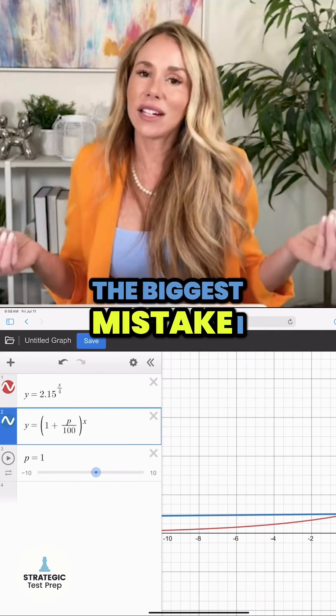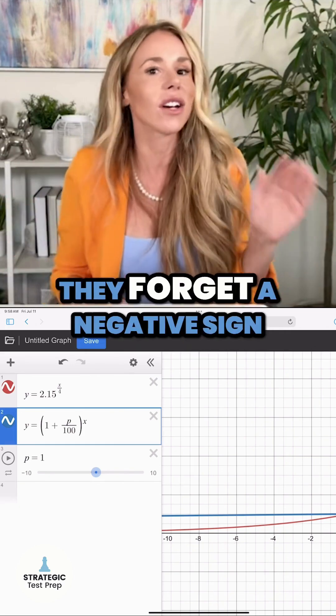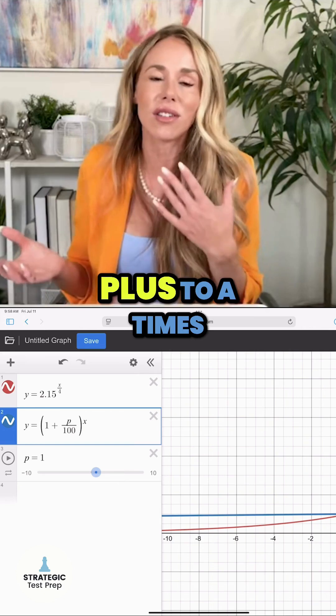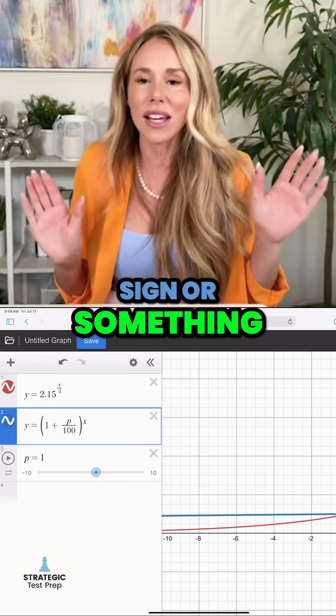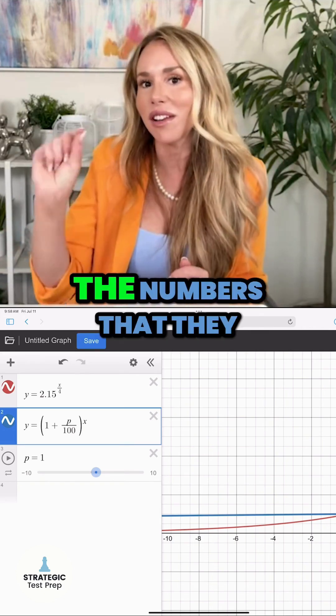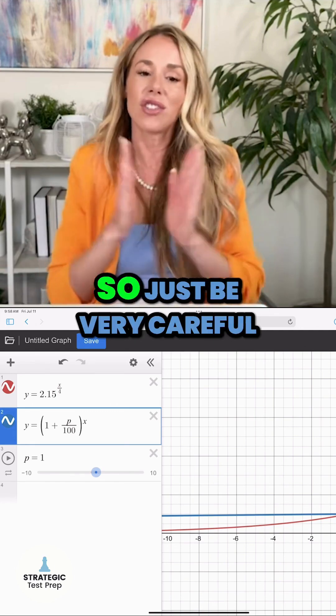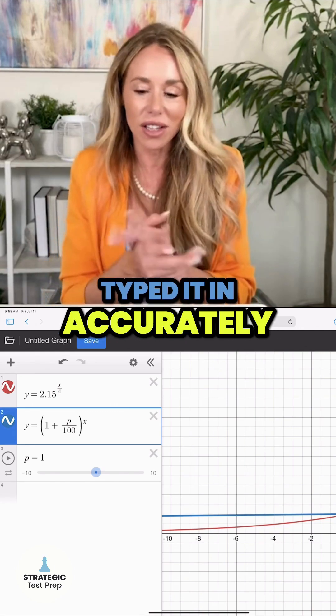The biggest mistake I see students make is they carelessly type in the equation and they forget a negative sign or they change a plus to a times sign or something, and then they get the question wrong, or maybe one of the numbers that they typed in was incorrect. So just be very careful, make sure that you've typed it in accurately.